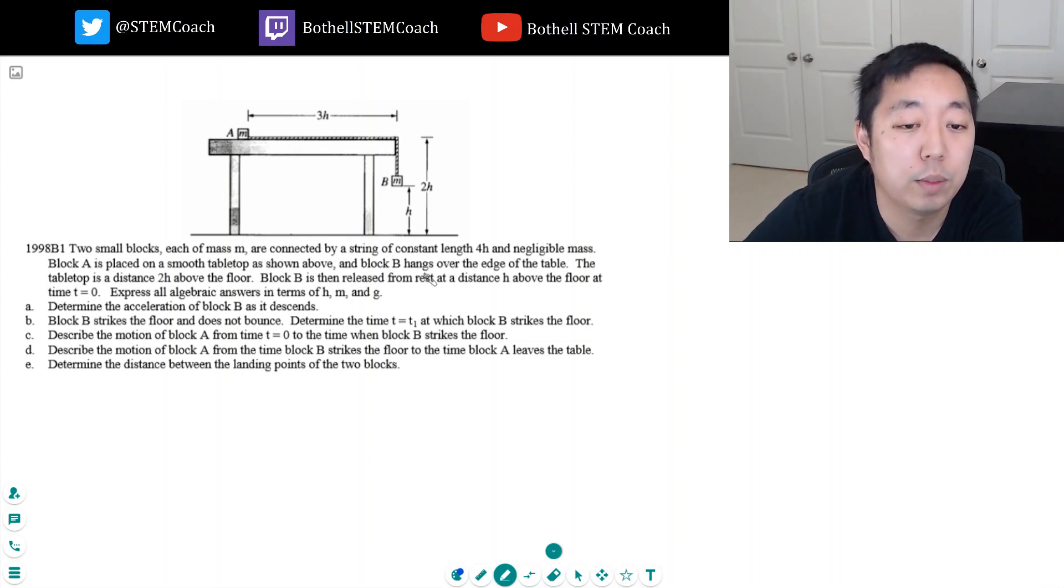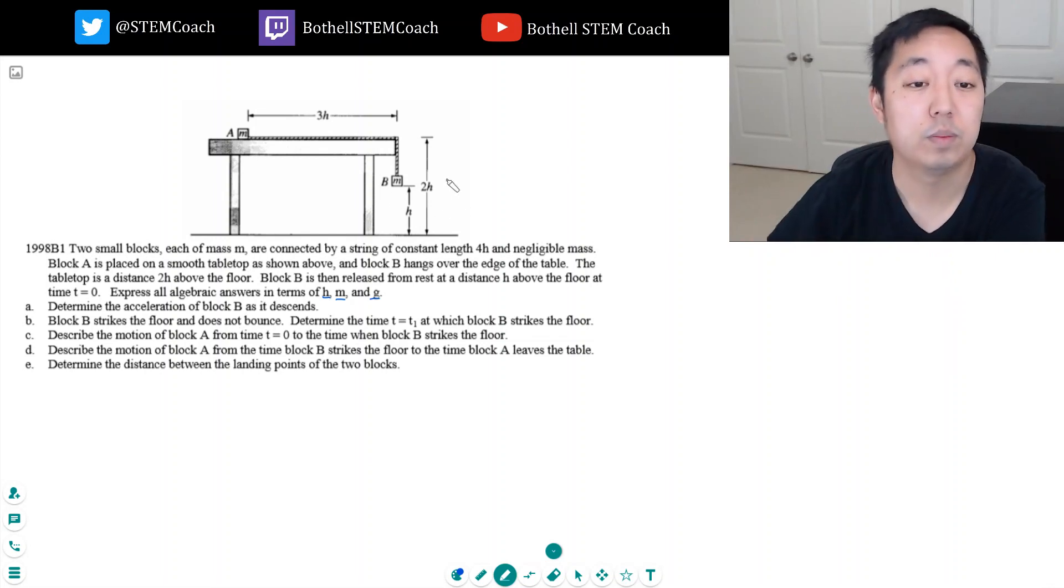So no friction. Block B hangs over the edge of the table. The tabletop is a distance 2H above the floor. Block B is then released from rest at a distance H above the floor at time zero. Express all algebraic terms in terms of H, M, and G. Determine the acceleration of block B as it descends.